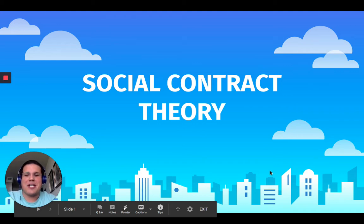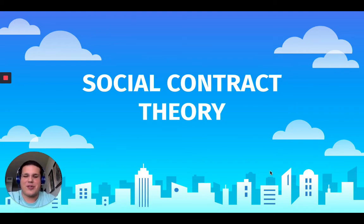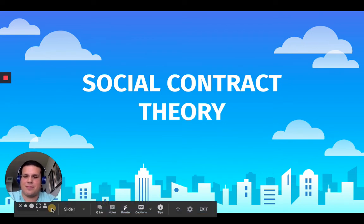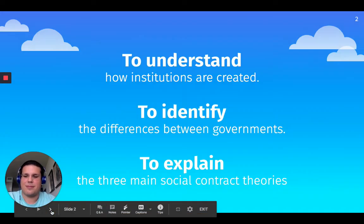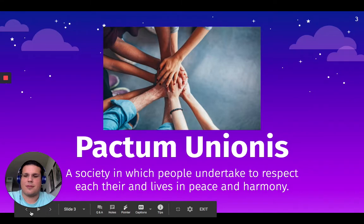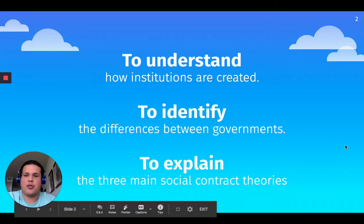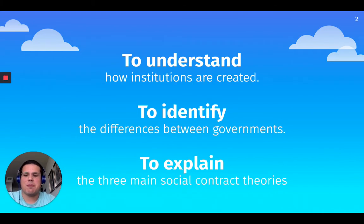Hello, today I'm going to be talking about social contract theory. Our objectives today are to understand how institutions are created, to identify the differences between governments, and to explain the three main social contract theories.